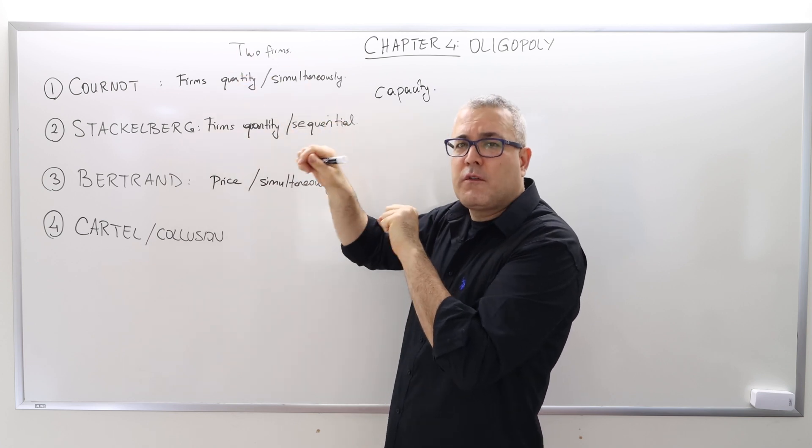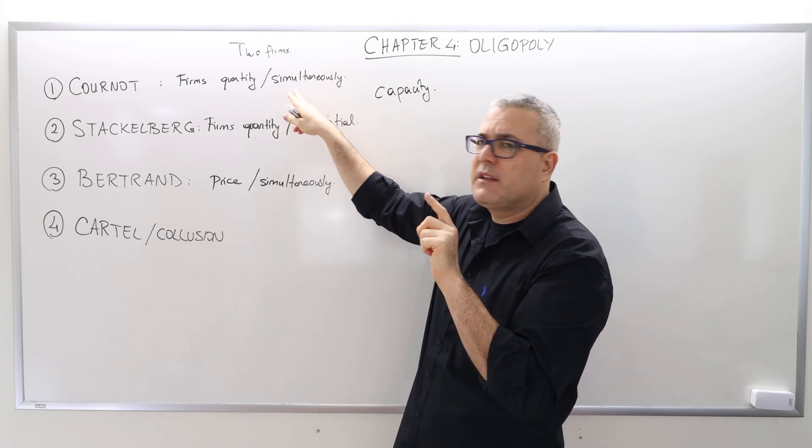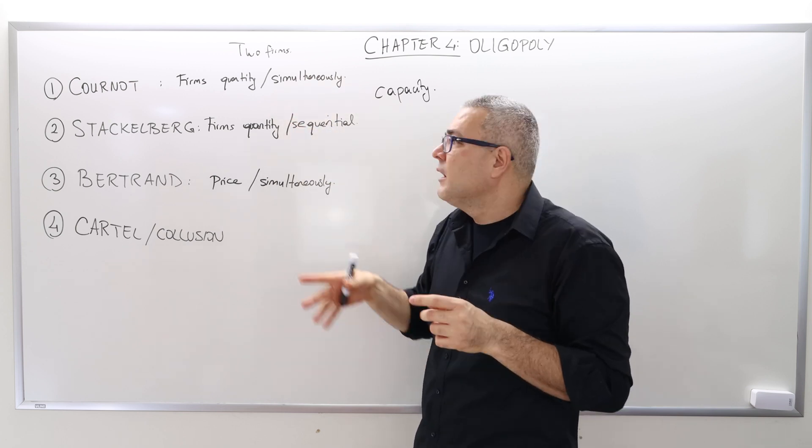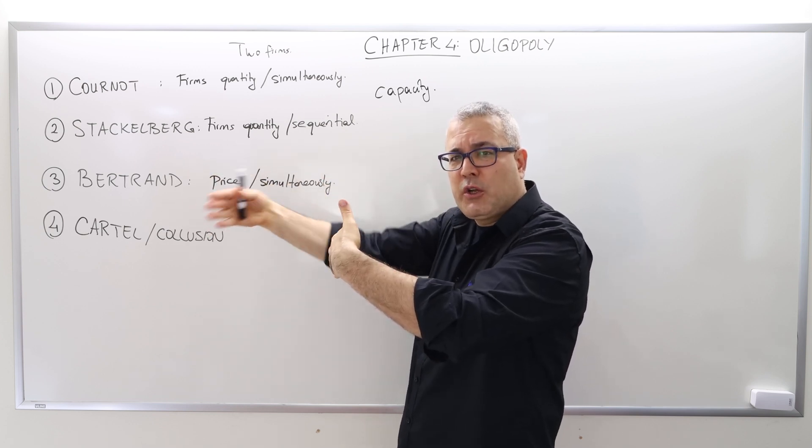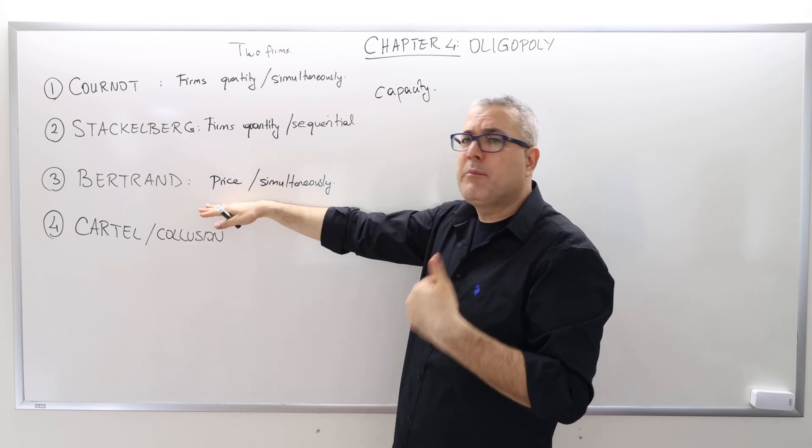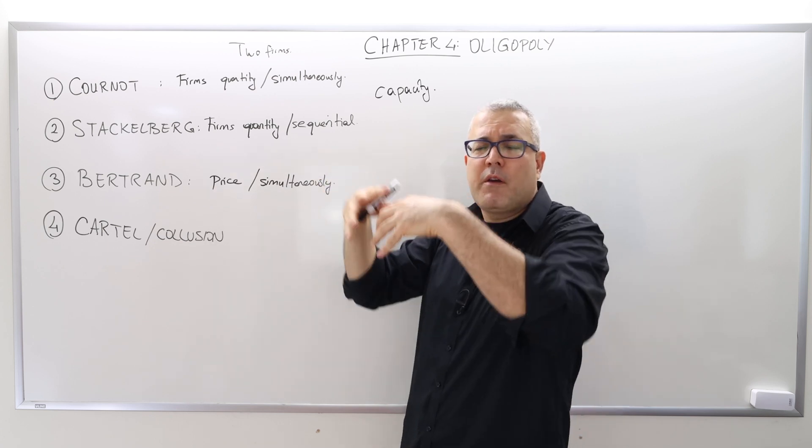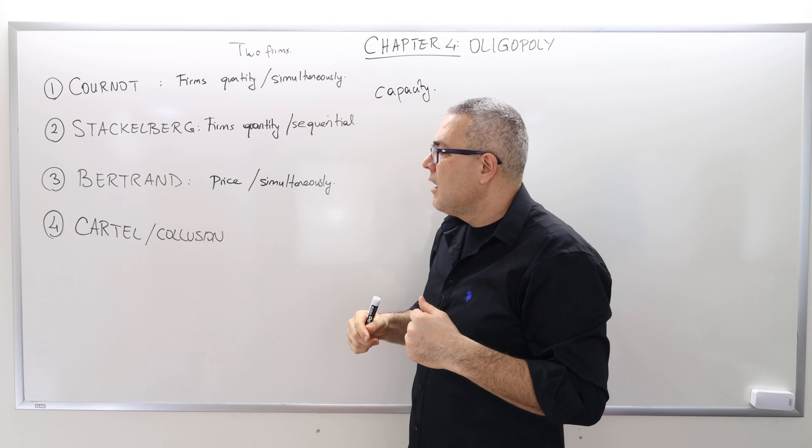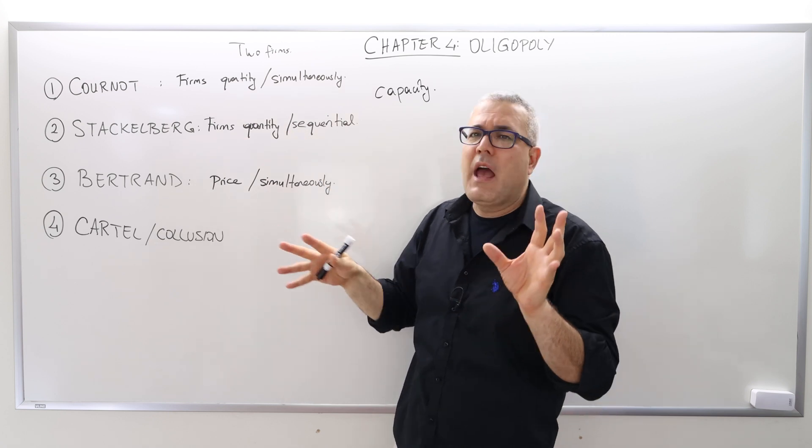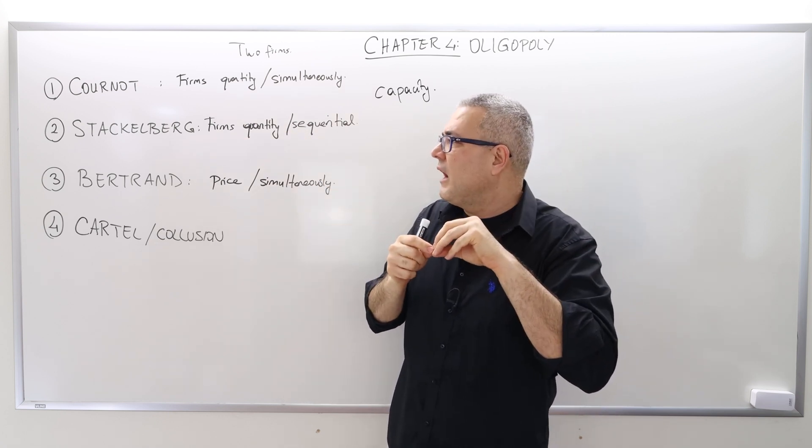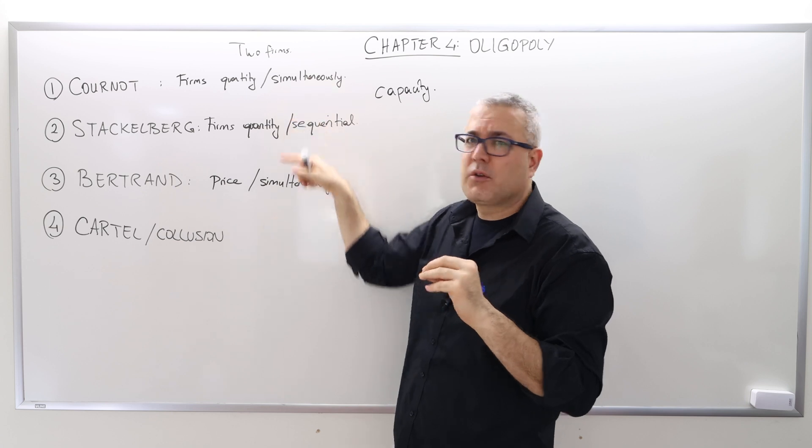So once again, in the Cournot and Stackelberg, the focus of the firms is the quantity choice, and so the price will follow through the demand. And the only difference between Cournot and Stackelberg is that in the Cournot, we choose at the same time. In the Stackelberg, there is this sequential move. So I choose first and then the second guy observes me and then chooses second. And in the Bertrand, this time the strategy changes. It's the price that firms choose, however, they choose simultaneously. In the cartel, the base model will be Cournot, and then we're going to ask, what if the firms actually act like a monopolist and then make the comparison with the Cournot?